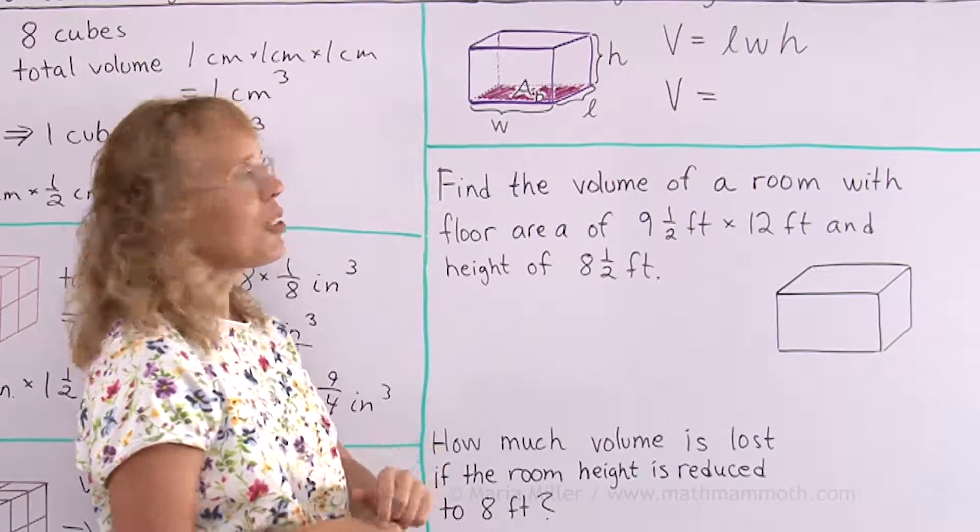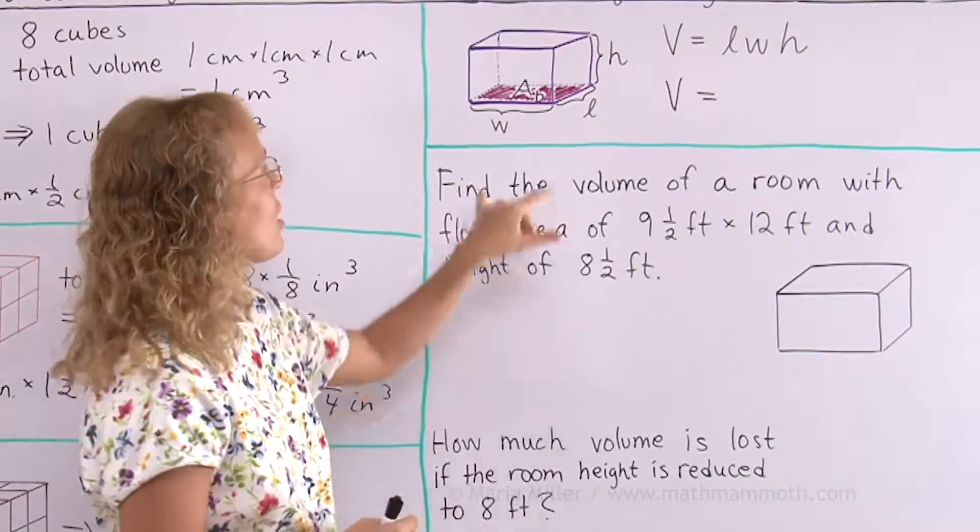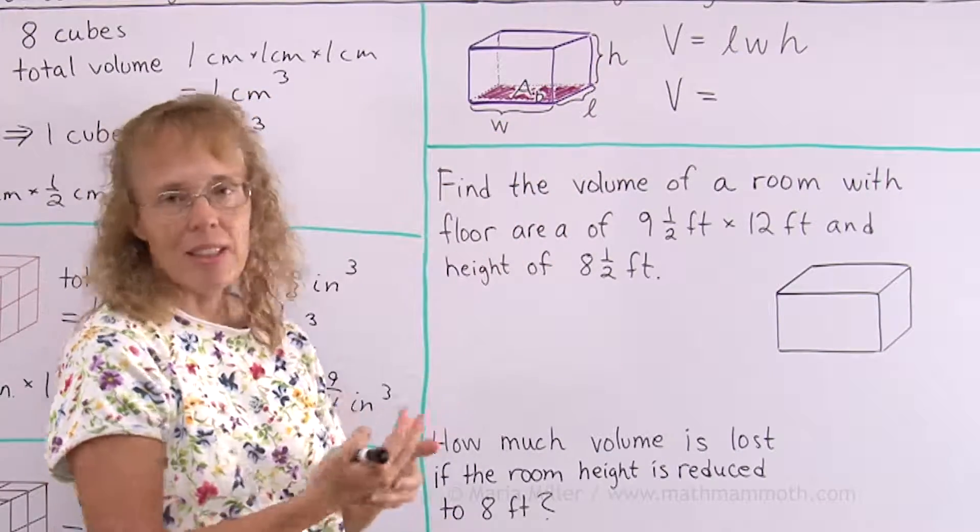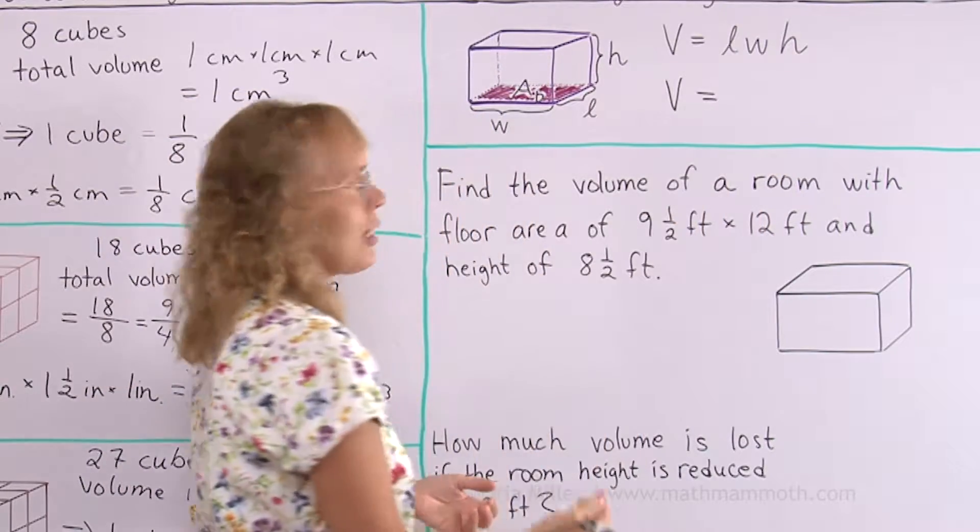To find its volume, therefore, you have already learned that we multiply those three dimensions: the width and the depth and the height, or you can call them the width and the length and the height. Anyway, multiply those three and you get the volume.